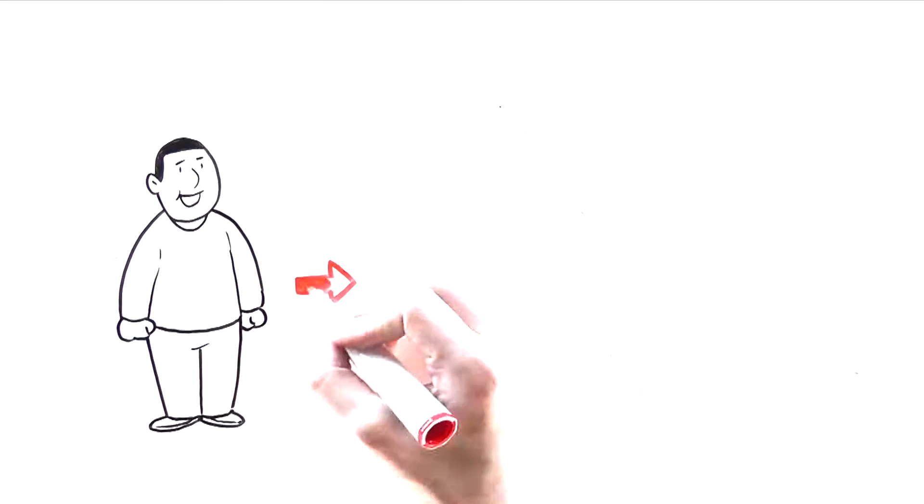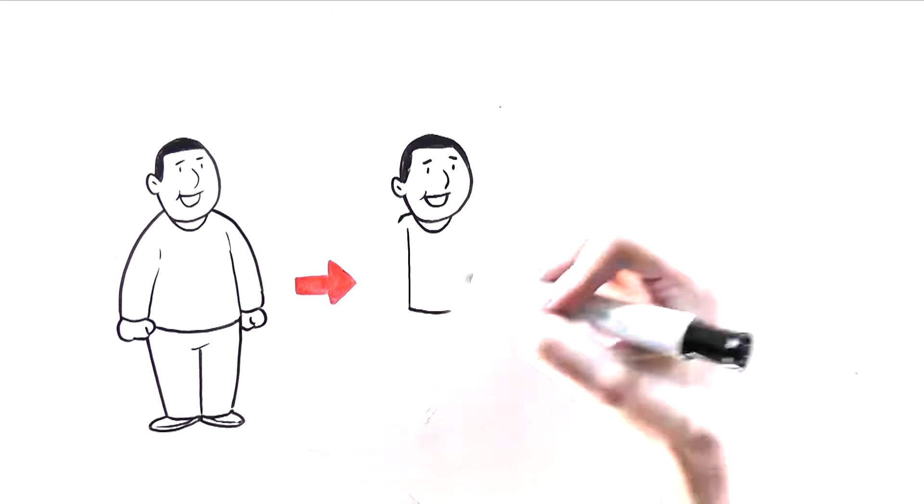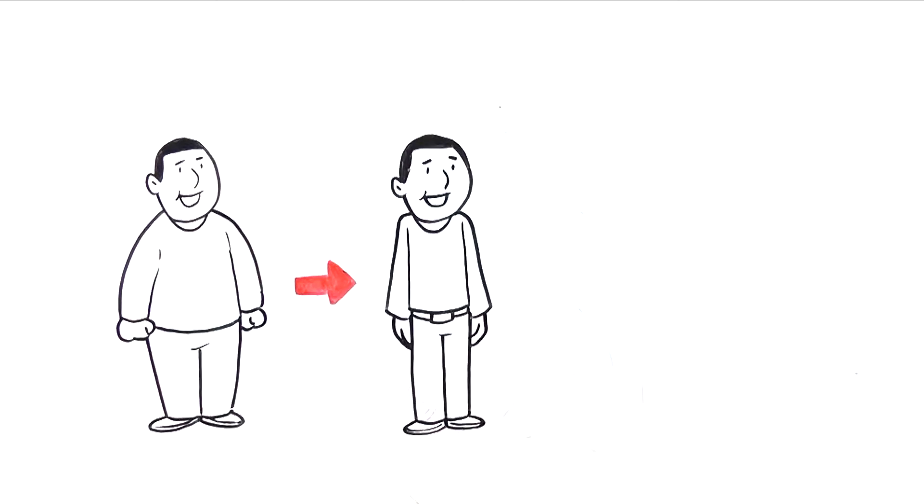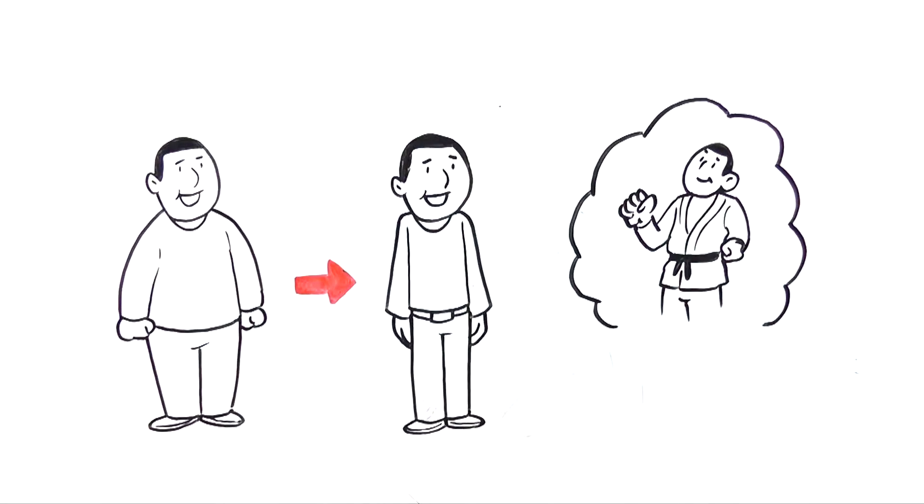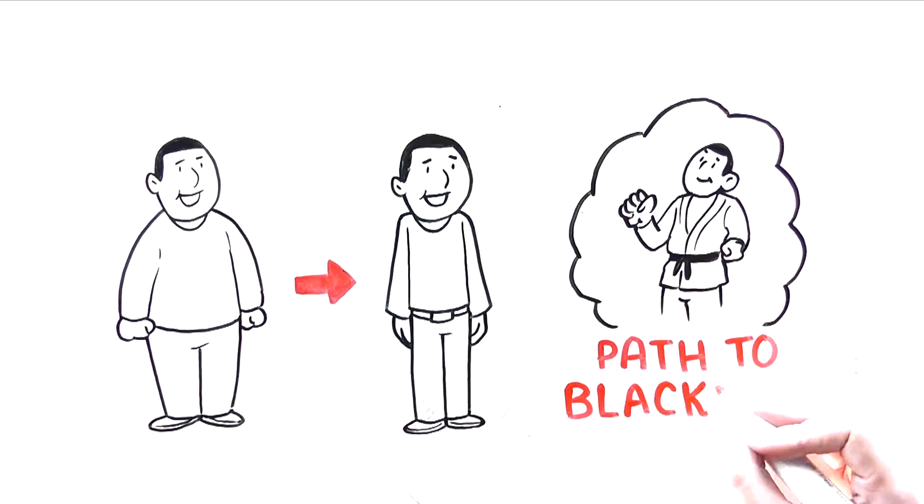Another student, Mikey, lost a ton of weight after joining a Gracie Barra gym five years ago. He's on the wrestling team at school and is on track to earn his blue belt at age 16, which puts him on the path to black belt.